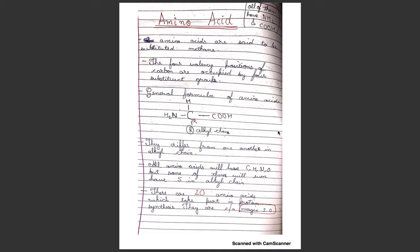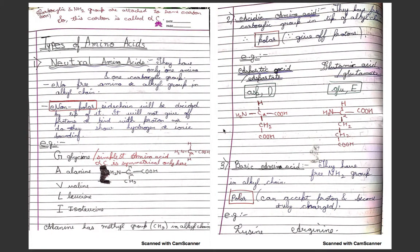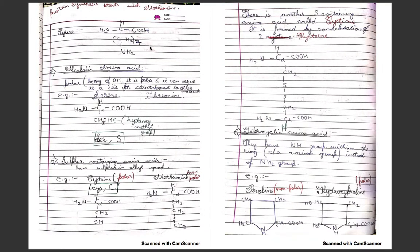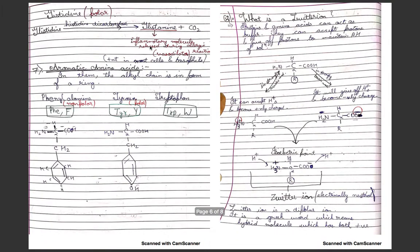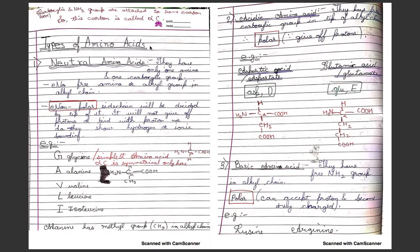All amino acids will definitely have carbon, hydrogen, oxygen, and nitrogen, but they may also contain sulfur in the alkyl chain. There are 20 amino acids which take part in protein synthesis, called the magic 20. Types include: neutral amino acid, acidic amino acid, basic amino acid, alcoholic amino acid, sulfur-containing amino acid, heterocyclic amino acid, and aromatic amino acid.